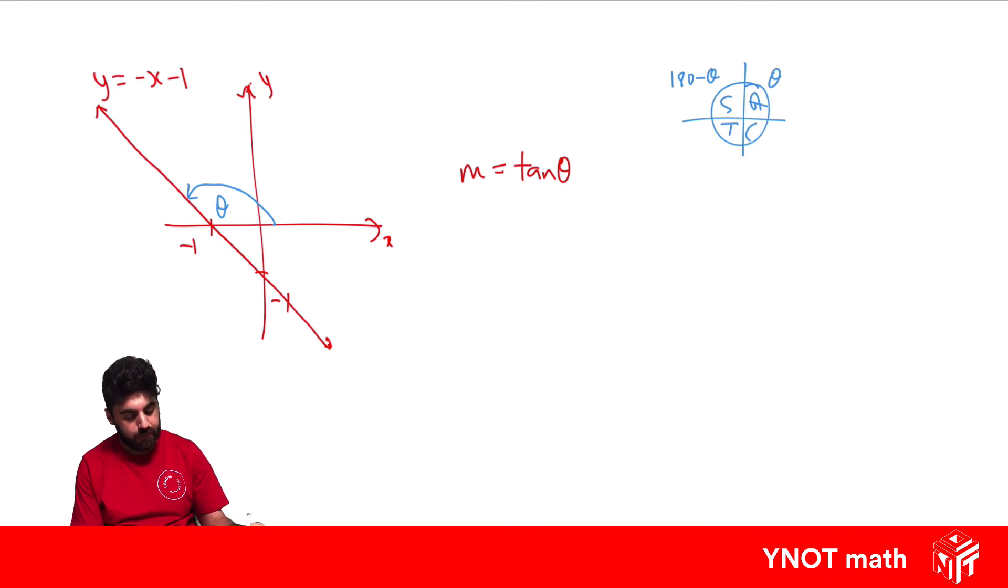Here we know the gradient is -1 because it's at a 45-degree angle this way, which means we've got 135 degrees this way. So if we found tan of 135, that's the same thing as tan...